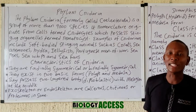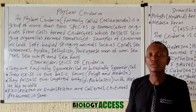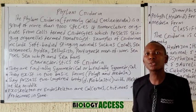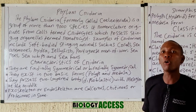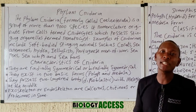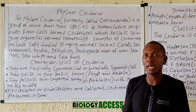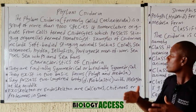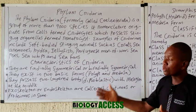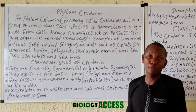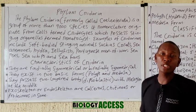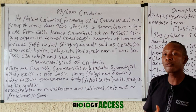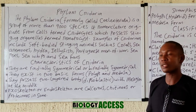What are their characteristics? They are actually radially or bi-radially symmetrical. We know that they are majorly marine with few freshwater species.